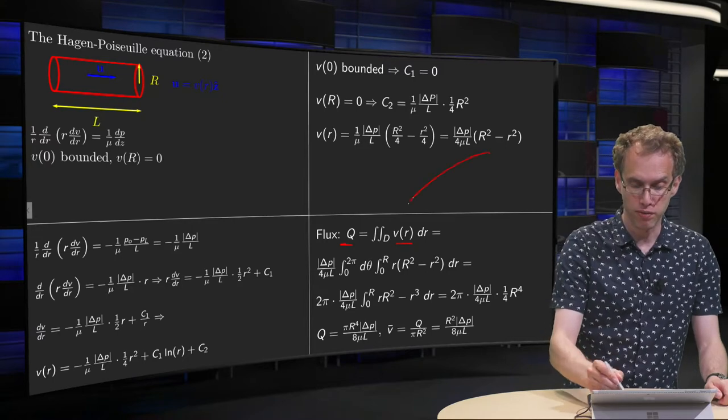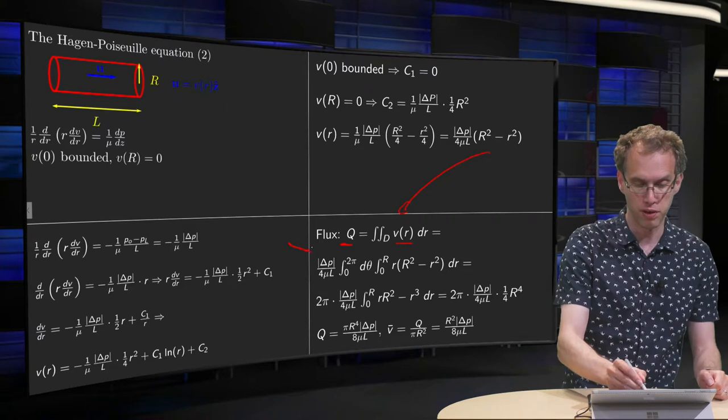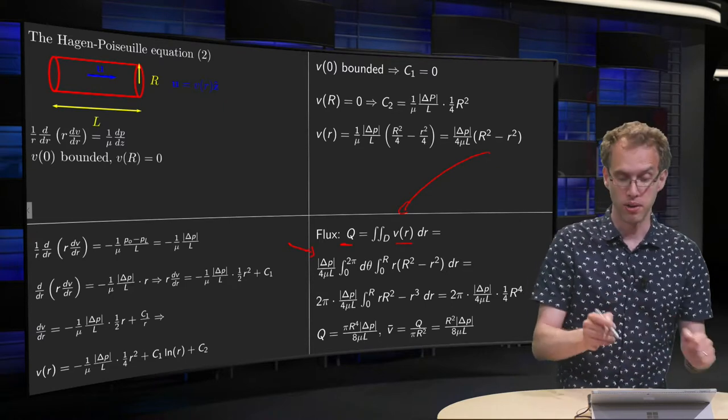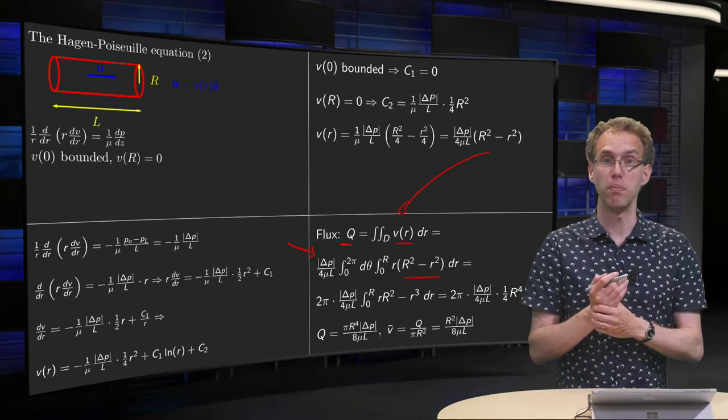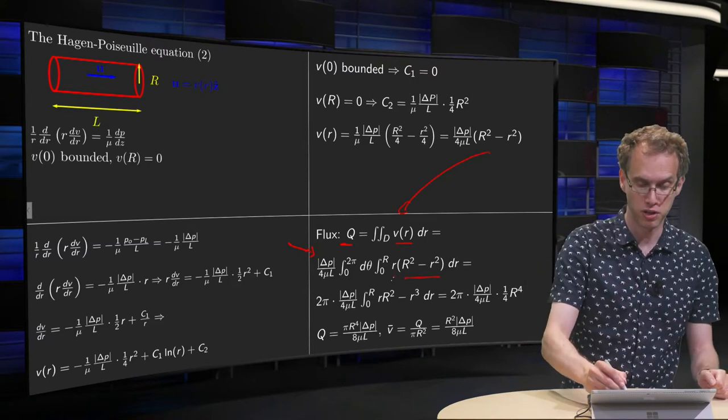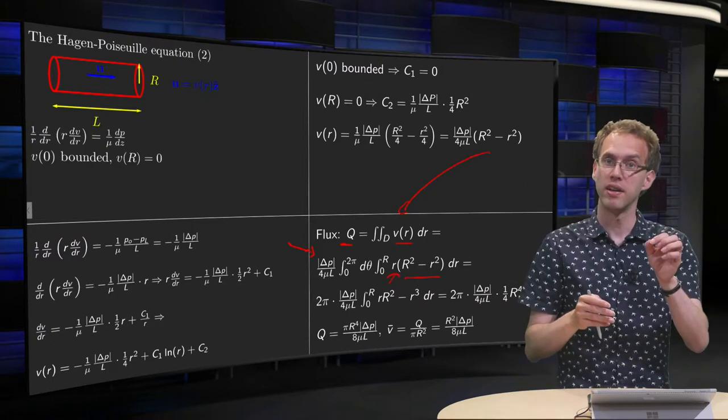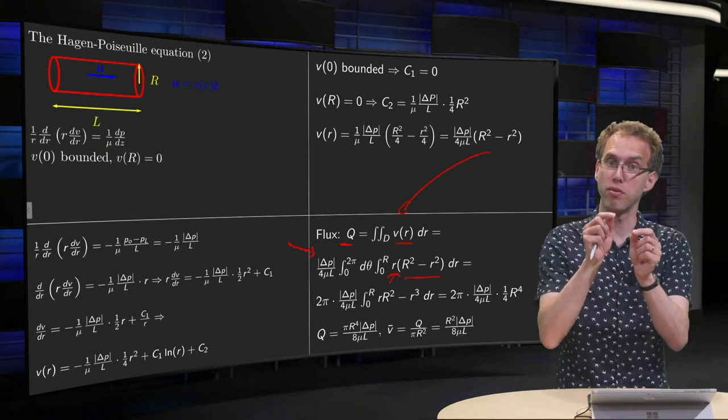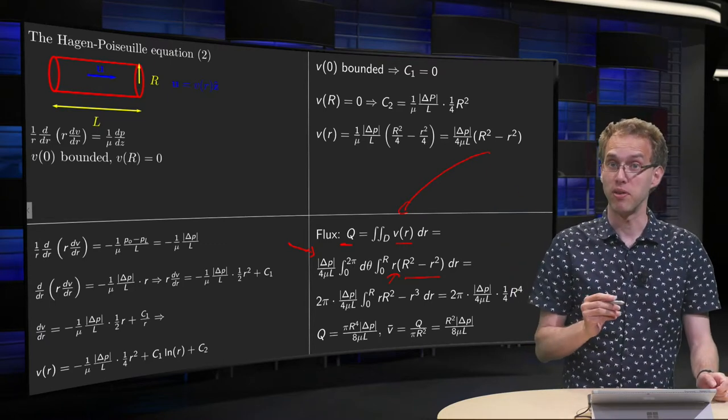Plug in what we know for V. This delta P over 4 mu L you can just put in front, because it is a constant, so you have to integrate R squared minus r squared. Use polar coordinates for that, so you get an additional factor of r. Theta going from 0 to 2 pi, and the integration variable r from 0 to capital R.